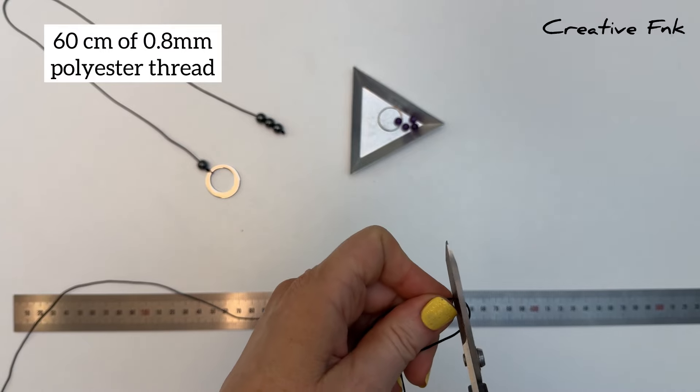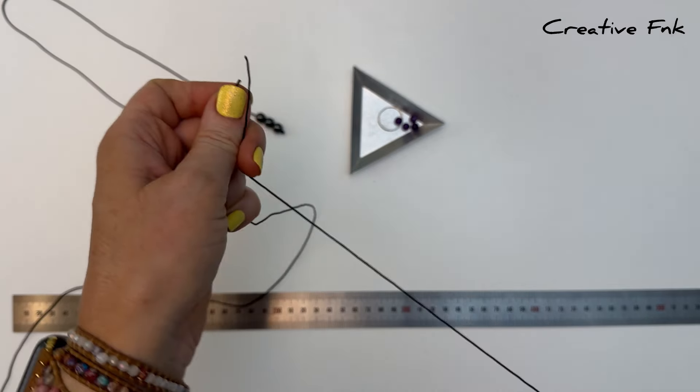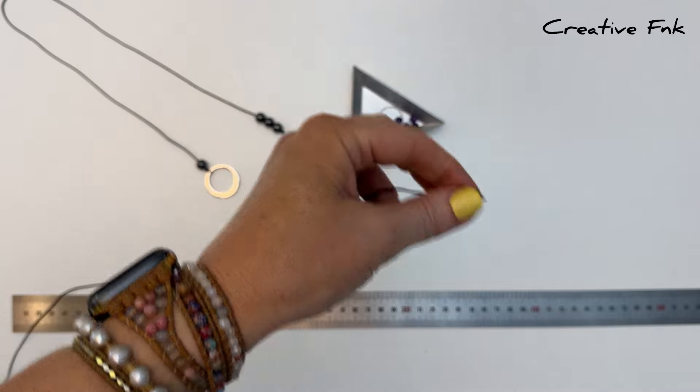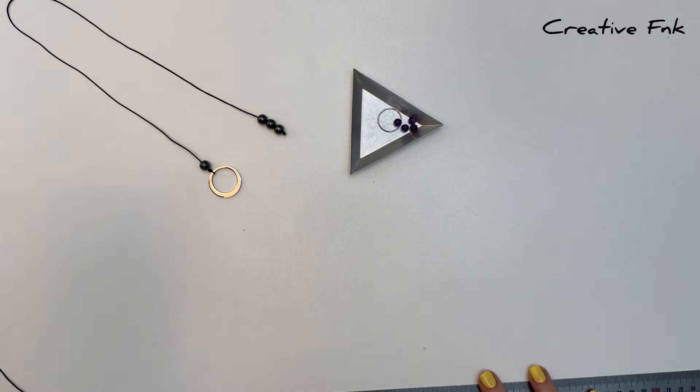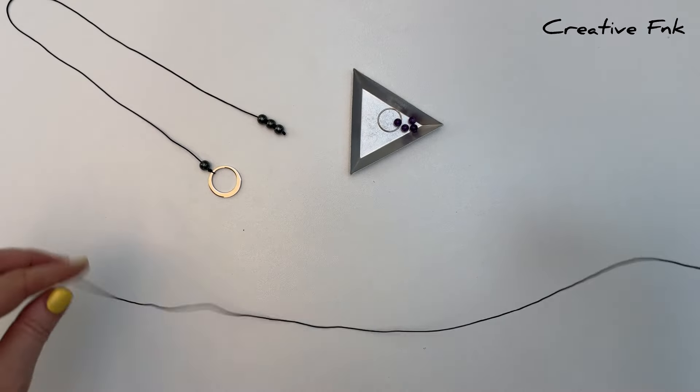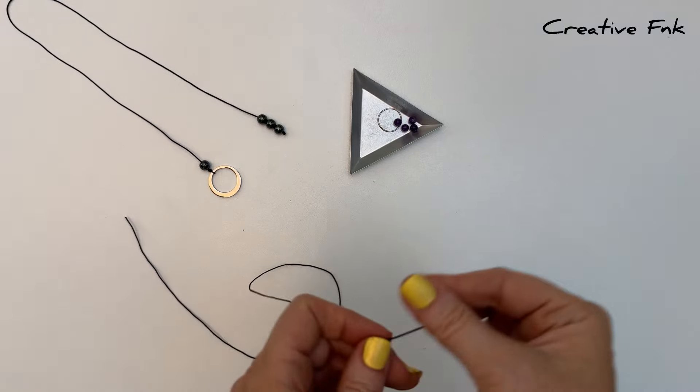This is quite a versatile design. You can use different thicknesses of cord and different size beads as well. Using different weights for the beads and ring will affect the weight distribution, but you can adjust the beads and weights on each end so it still sits really nicely.